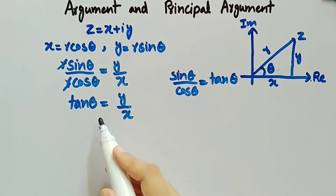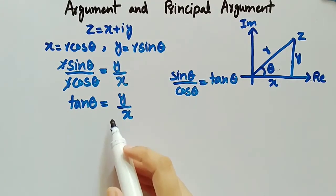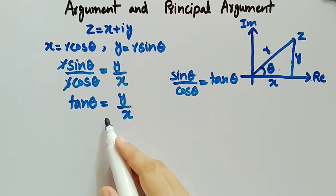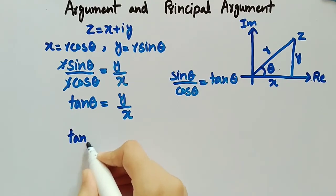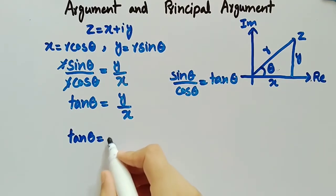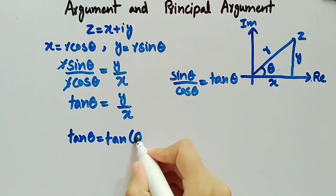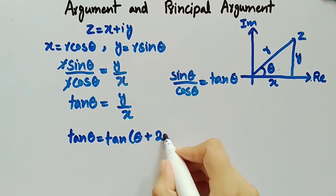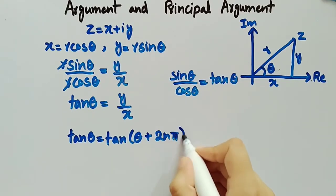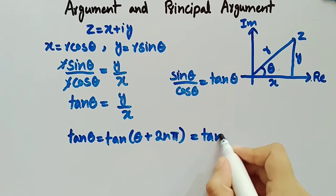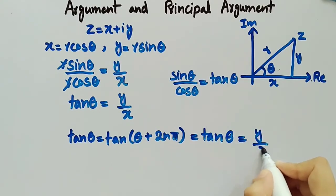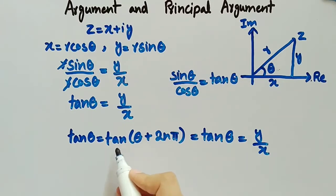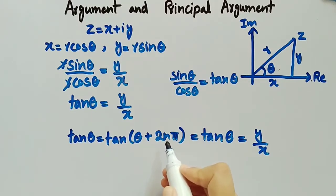This equation is satisfied for infinitely many values of θ, since tan θ is a periodic function with period 2π. We can write it as tan θ equals tan(θ + 2nπ), which equals y over x. So tan θ equals tan(θ + 2nπ).